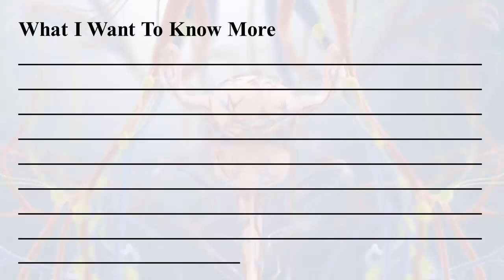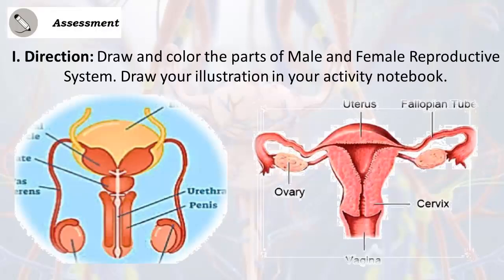What I Want to Know More. Direction: Draw and color the parts of the male and female reproductive system. Draw your illustration in your activity notebook.